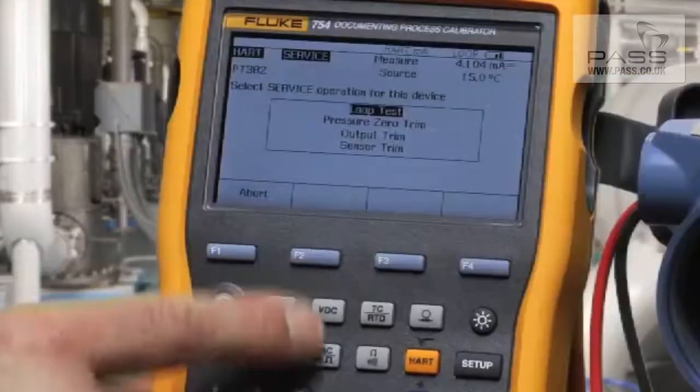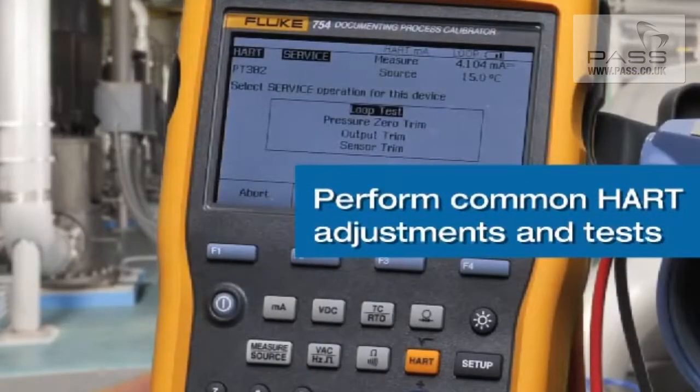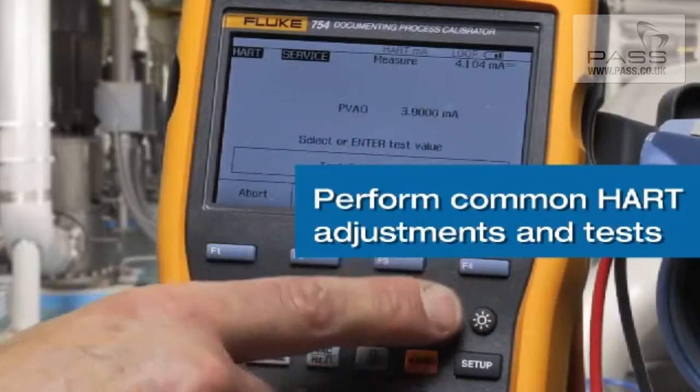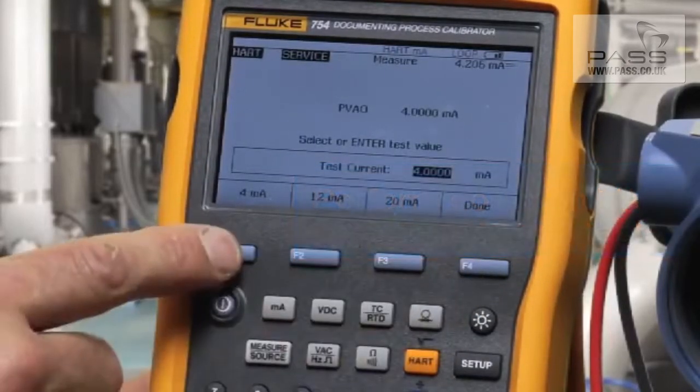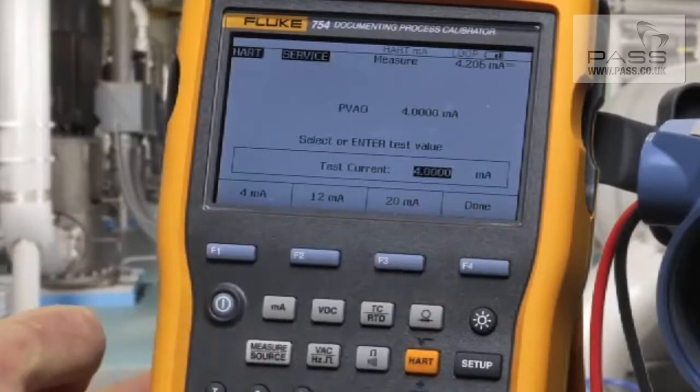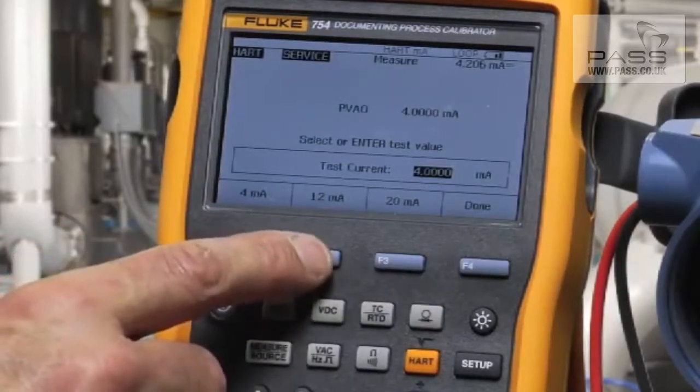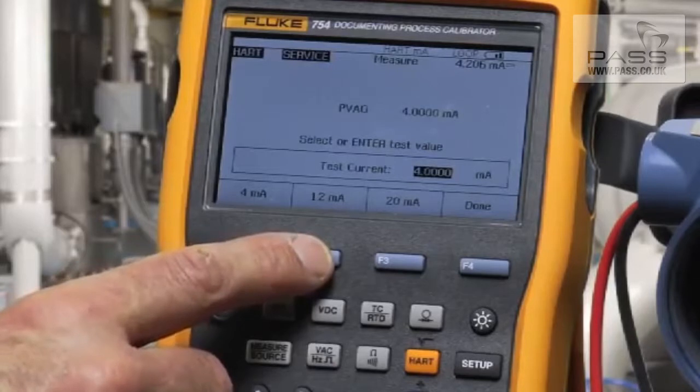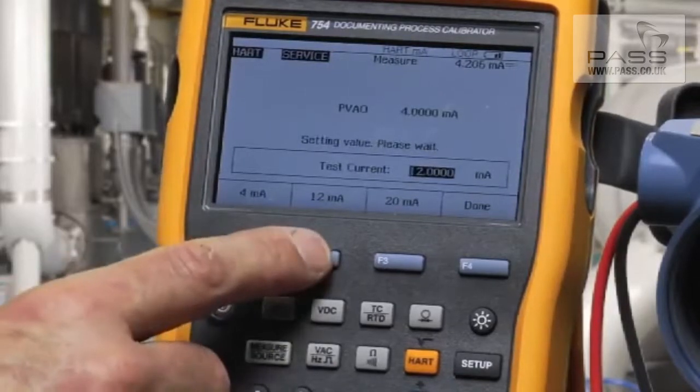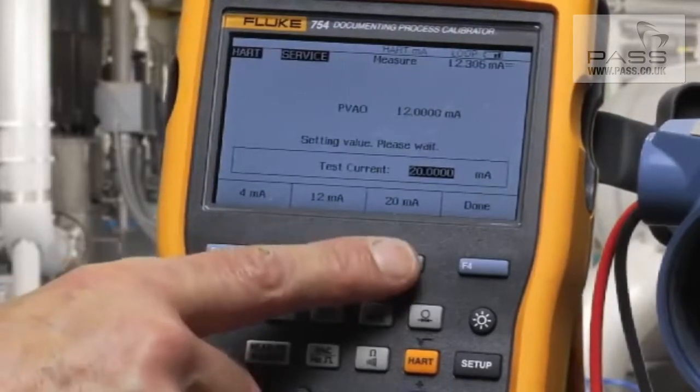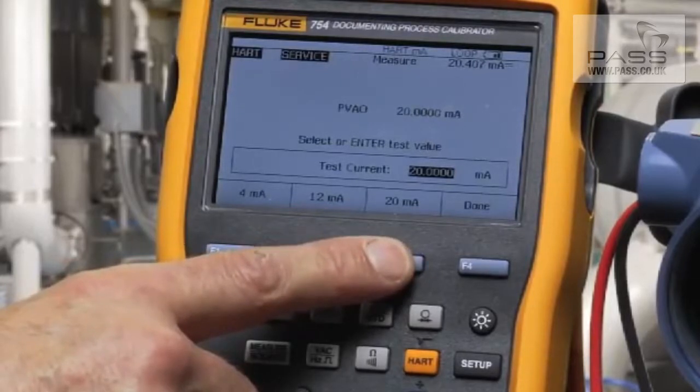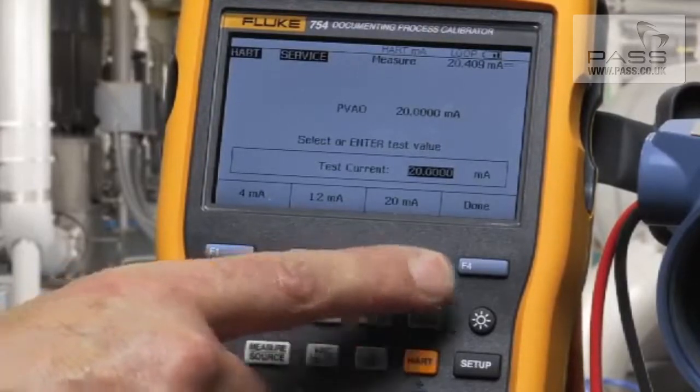In the Service menu, we can perform a loop test. Select Loop Test, and we use the calibrator to drive the HART signal into the transmitter as a source back into the home run of the I.O. By selecting 12 milliamps and 20 milliamps, we can test and determine that the output section of the transmitter is working correctly.